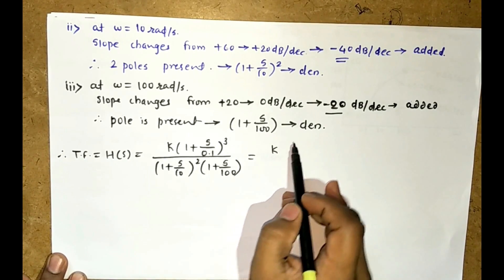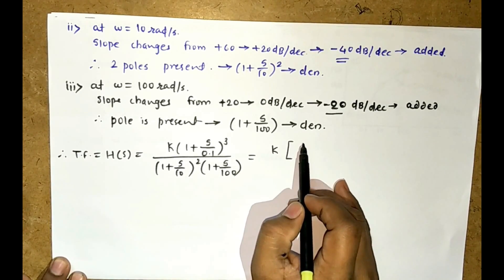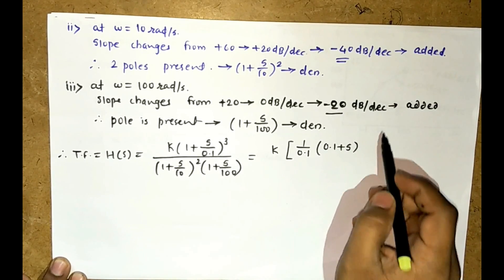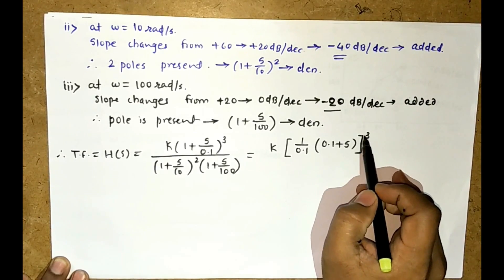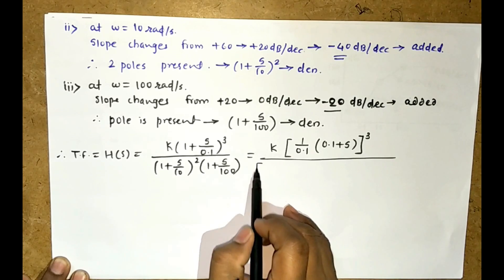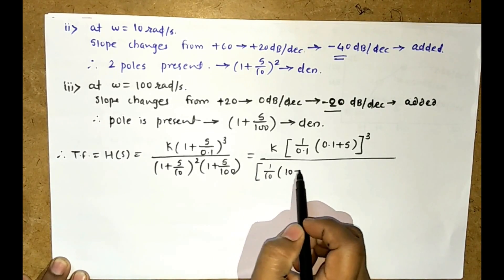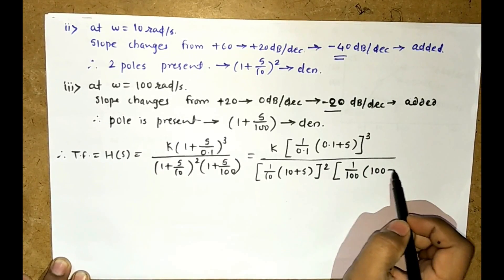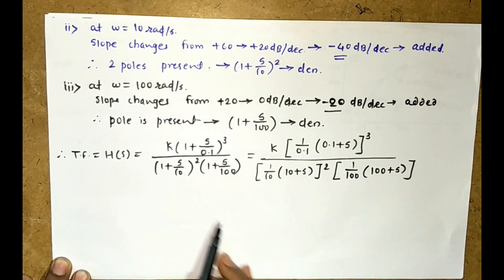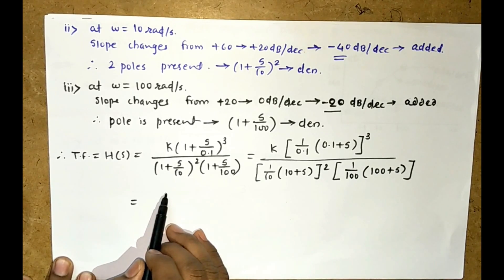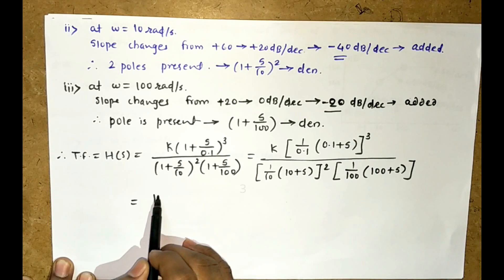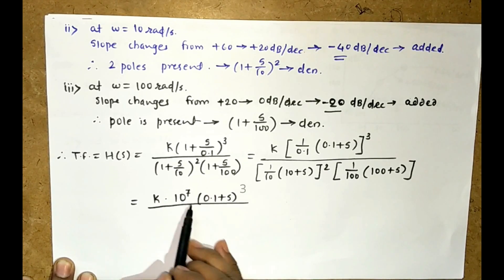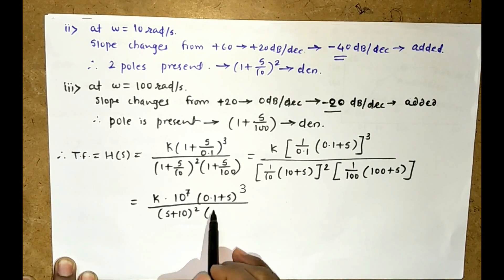Now simplify: take 1/0.1 common from the numerator to get (0.1 + S)³, take 1/10 common from the first denominator factor to get (10 + S)², and take 1/100 common from the second to get (100 + S). After simplification you get 10⁷ · K · (0.1 + S)³ / [(S + 10)²·(S + 100)].